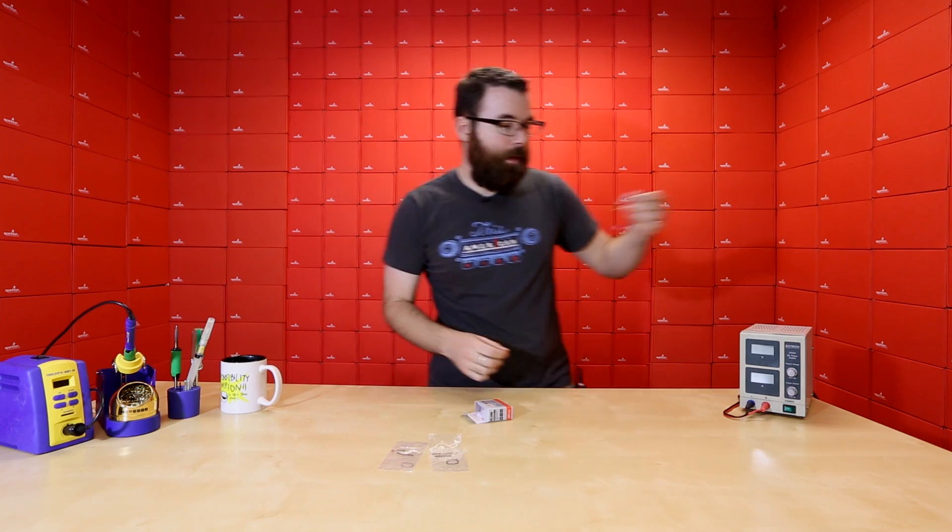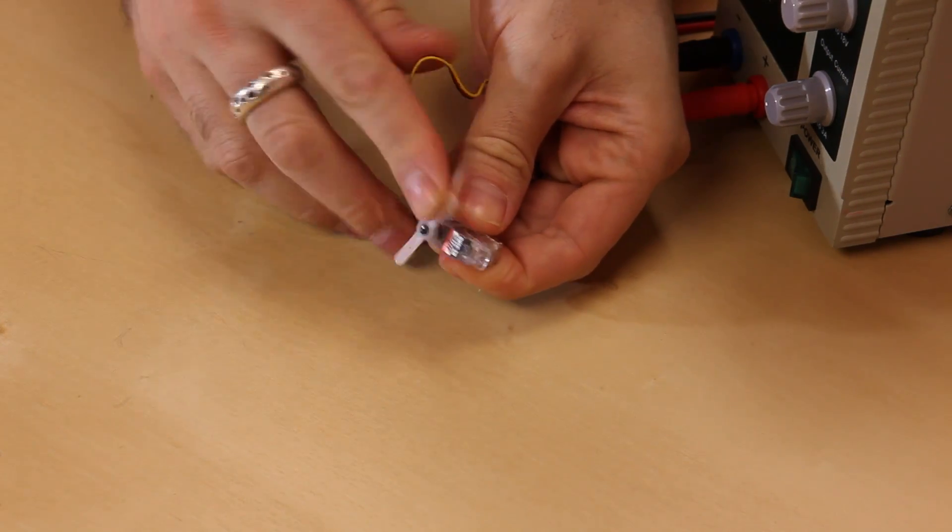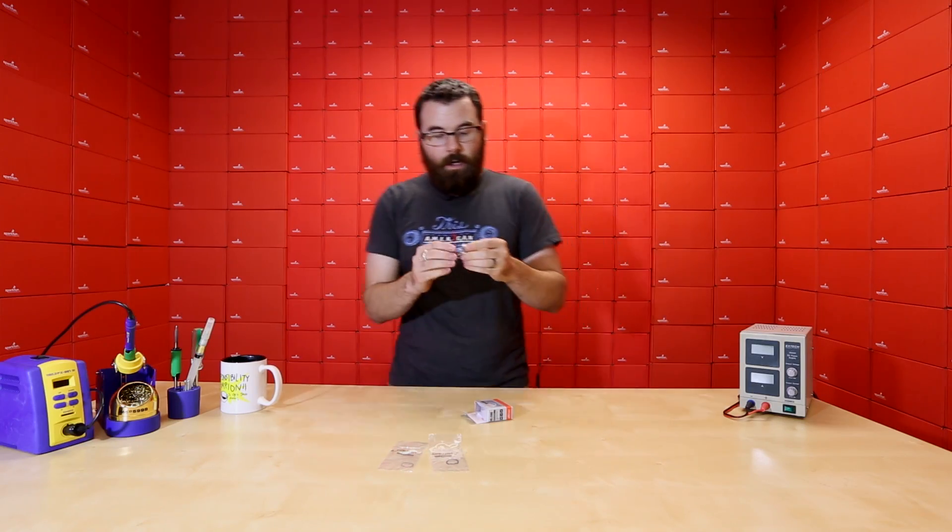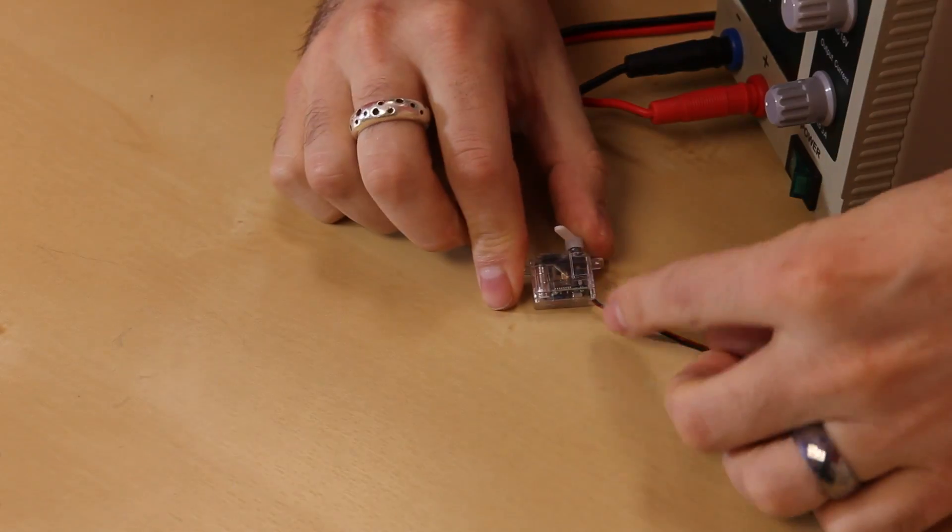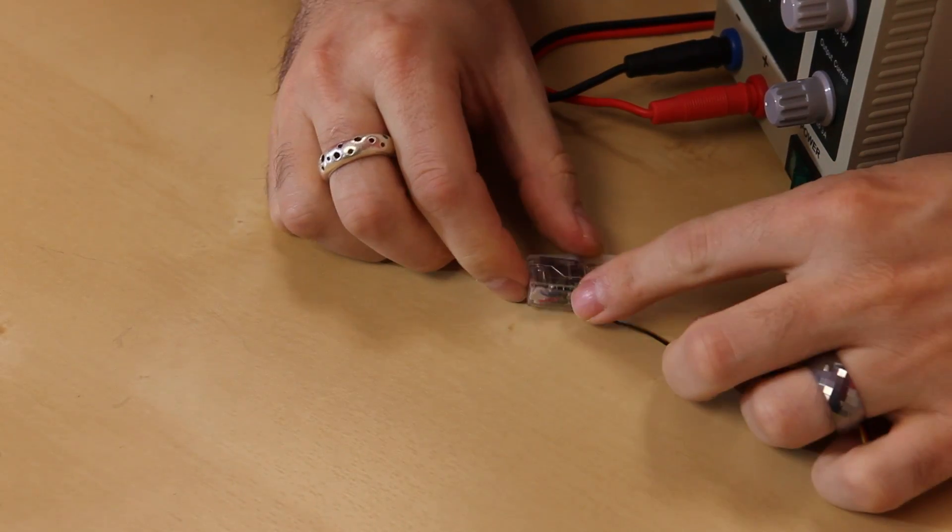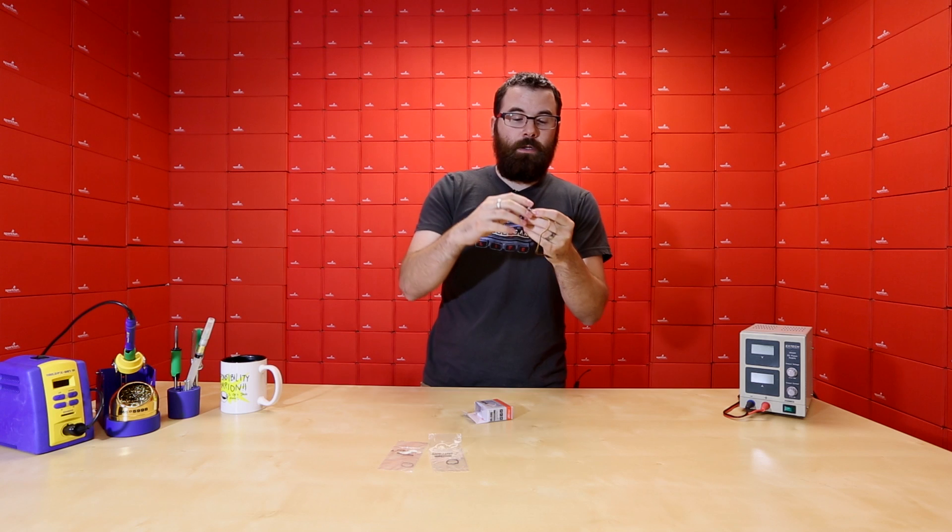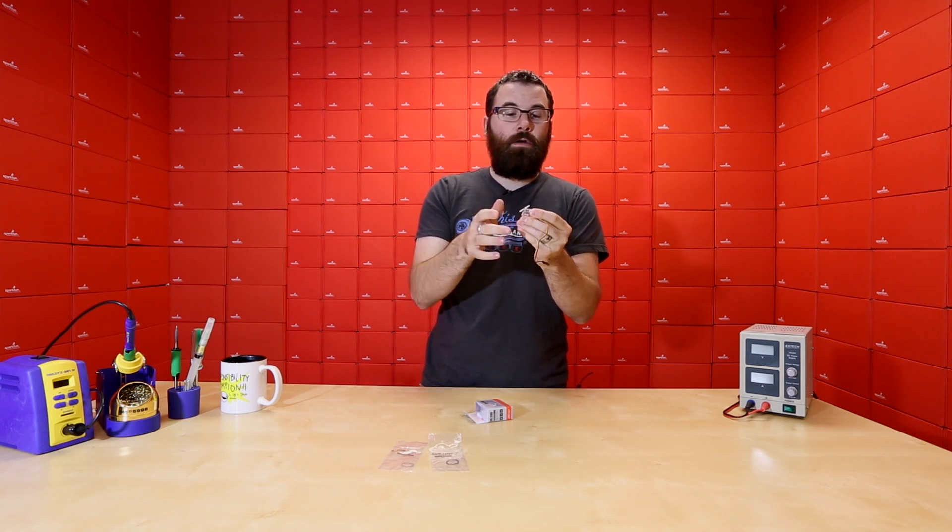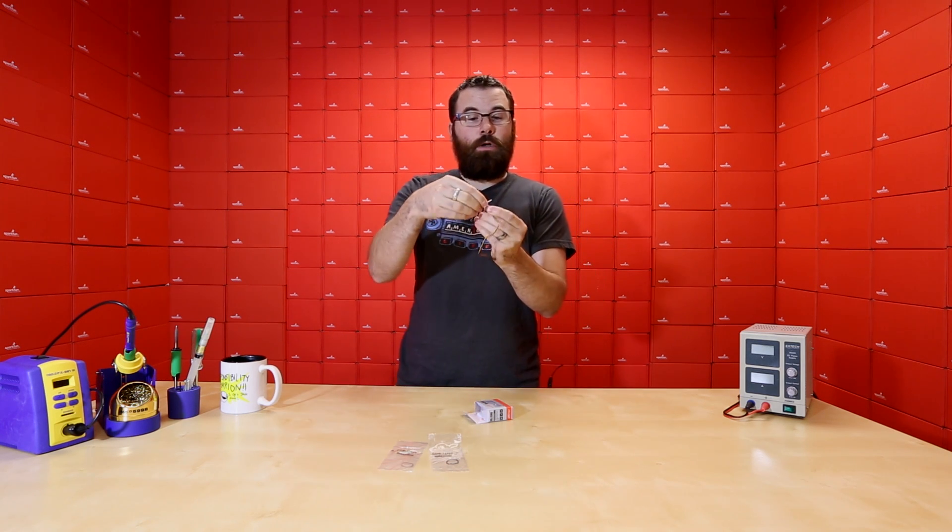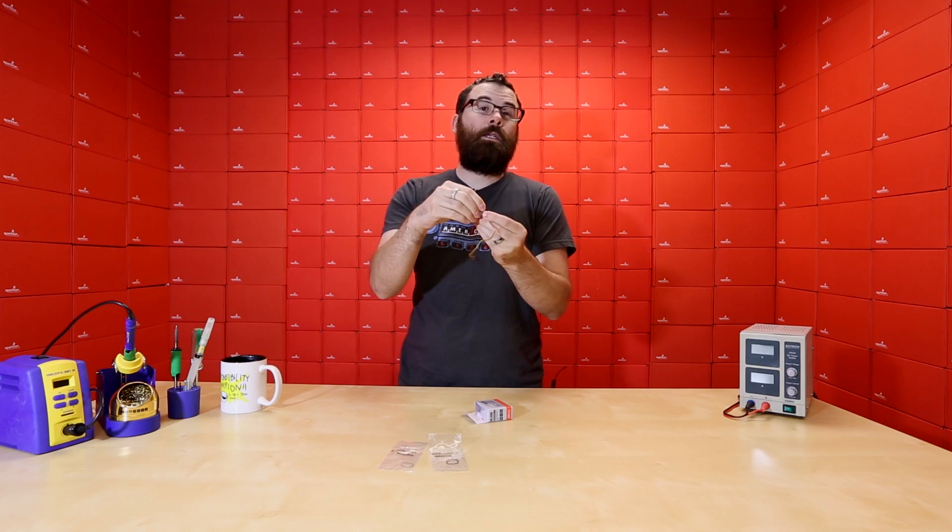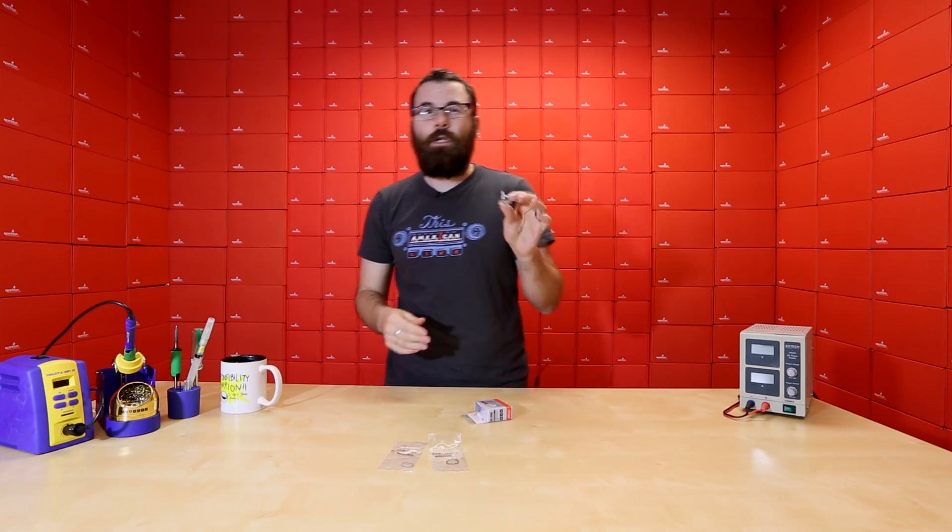The interesting thing that I'll point out about this motor is that it seems to be a continuous rotation but it's actually not. Because this is so tiny the feedback potentiometer doesn't actually engage when it's off. So this will spin 360 degrees but then when you turn it on it actually finds a neutral position and then is engaged. So this is not a continuous rotation.